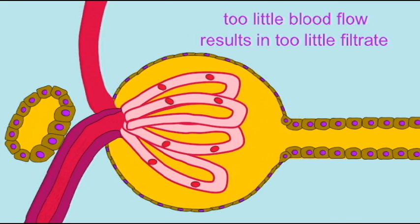If there is too little blood pressure passing through the afferent arteriole, then there will not be sufficient blood pressure in the glomerular capillaries and thus there will be a reduced amount of filtrate.